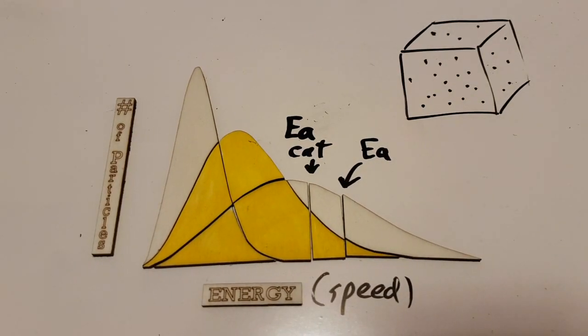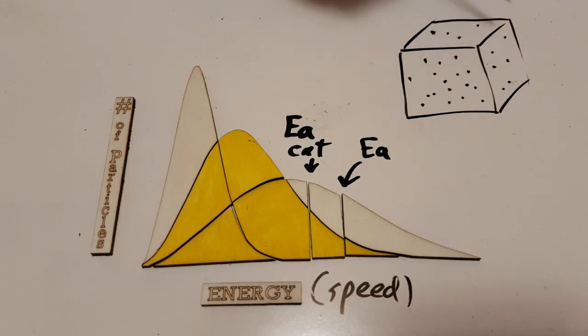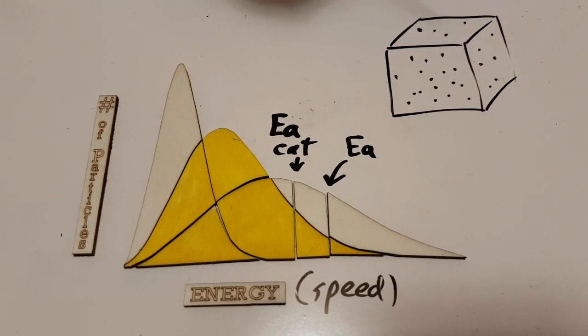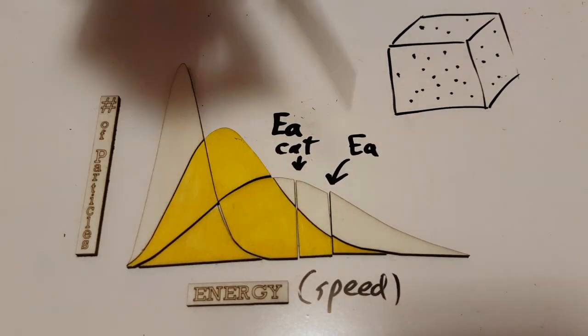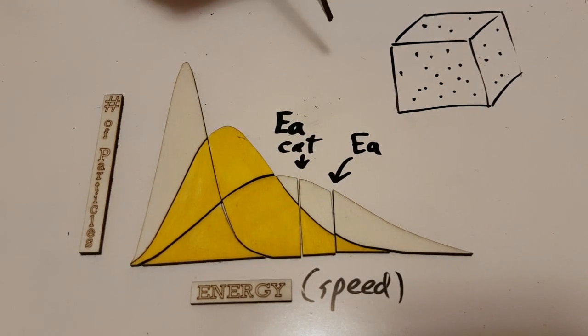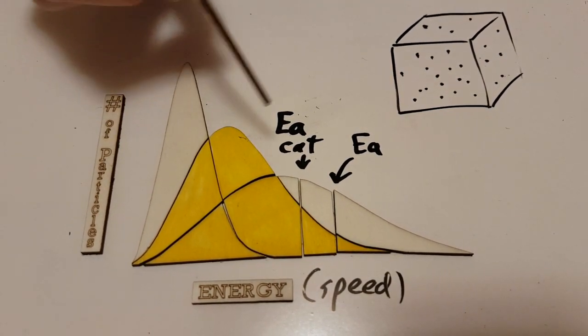So this is the Boltzmann distribution. If you recall, imagine a box full of gas particles. How are those energies or speeds of the gas particles distributed? Well, it depends on their temperature.